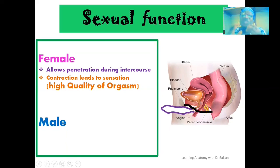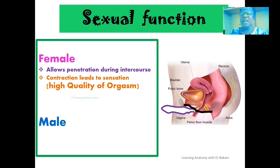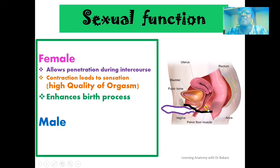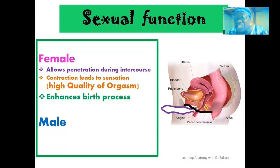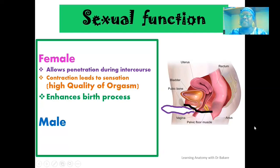The pelvic floor also helps to provide high-quality orgasm, achieved through contraction of the pelvic floor during climax, which stimulates an intense sensational response so that the quality of orgasm is high. Finally in the female, it enhances the birth process: the pubovaginalis fibers insert on the wall of the vaginal canal, and relaxation of the pelvic floor leads to simultaneous relaxation of the pubovaginalis, causing expansion of the vaginal canal wall so that the baby can easily pass through.